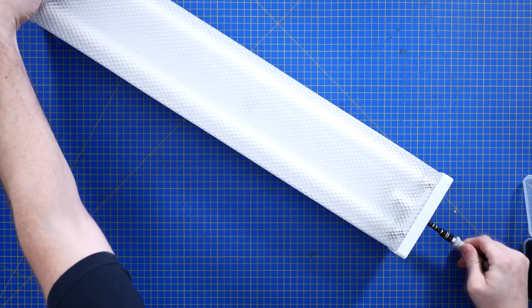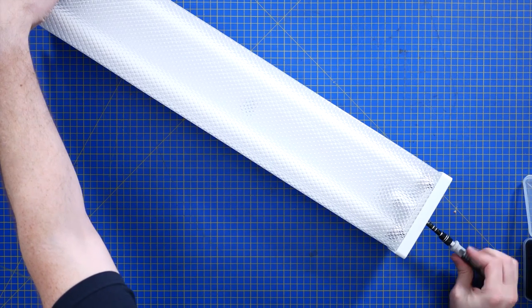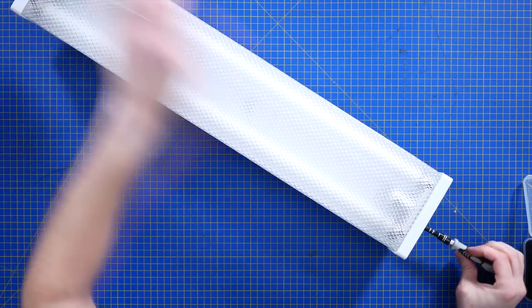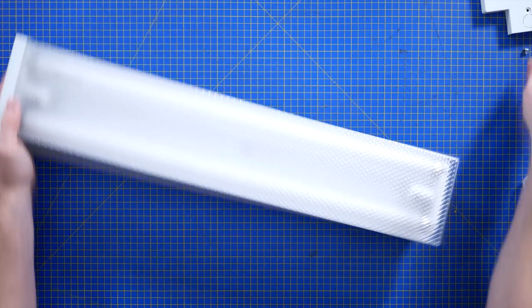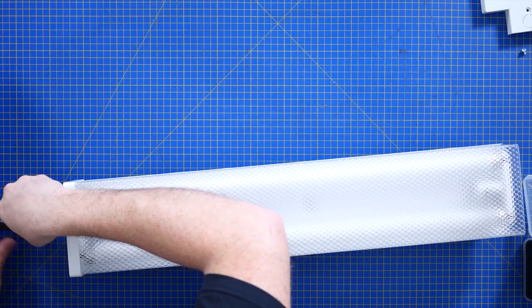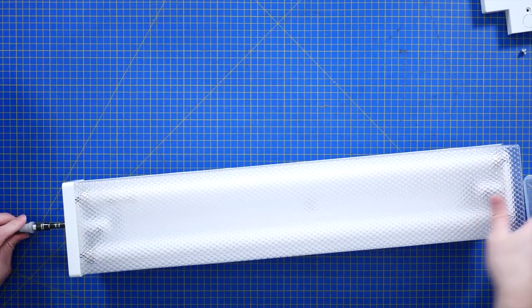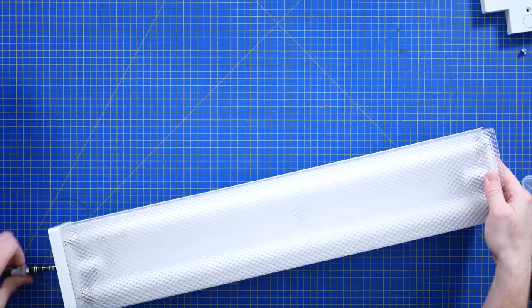One thing I will say about fluorescent lighting - and I have been around my fair share of it in my career - is that you rarely find really high build quality. They always seem to be really cheap pressed metal that just flexes and bends the first time you touch it.